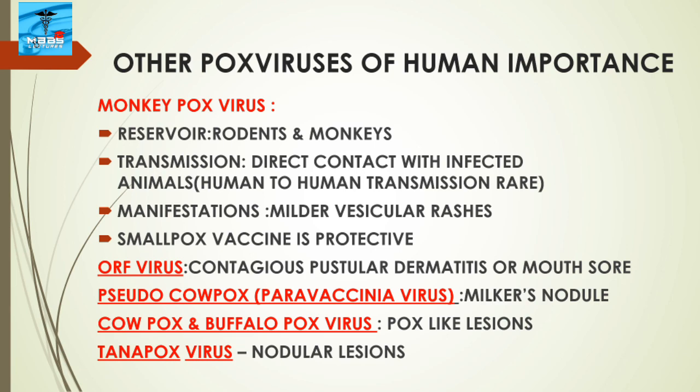Other poxviruses of human importance include monkeypox virus, orf virus (pseudocowpox or paravaccinia virus), cowpox and buffalopox virus, and tanapox virus. For monkeypox virus, the reservoir is rodents and monkeys, transmission occurs through direct contact with infected animals, and human-to-human transmission is very rare. Manifestations include milder vesicular rashes than smallpox. Smallpox vaccine is protective. Orf virus causes contagious ecthyma or sheep sore; pseudocowpox causes milker's nodules; cowpox/buffalopox causes pox-like lesions; and tanapox causes nodular lesions.